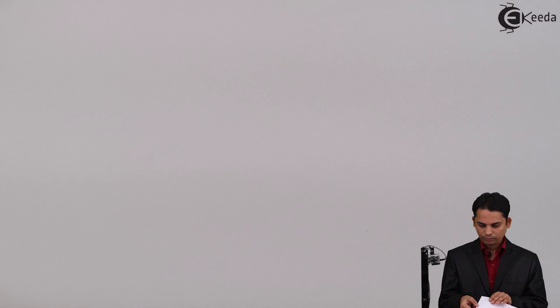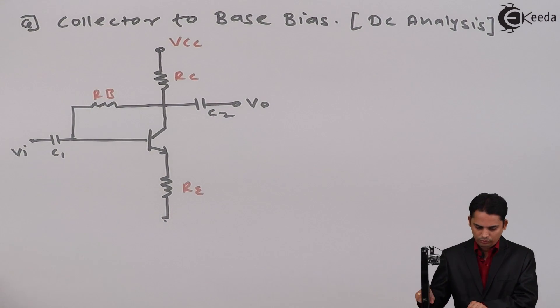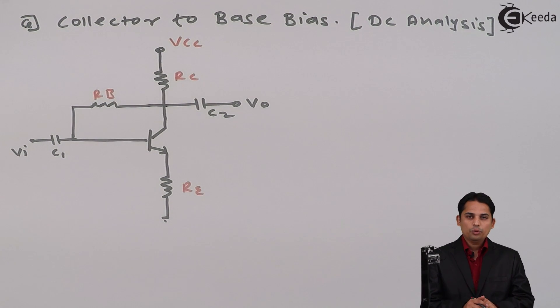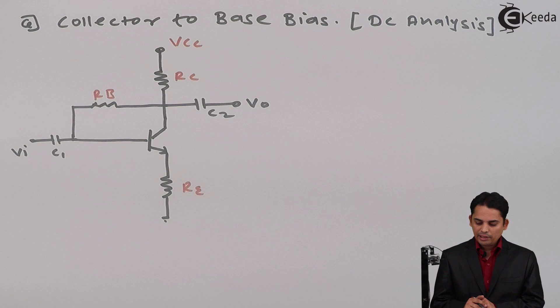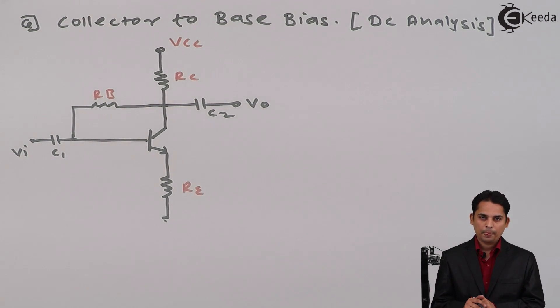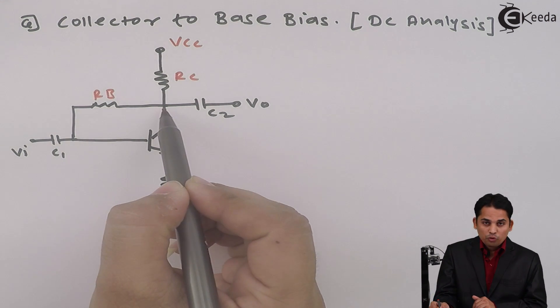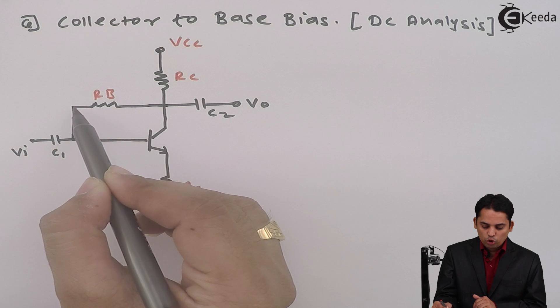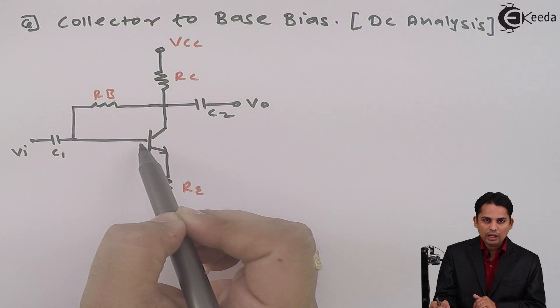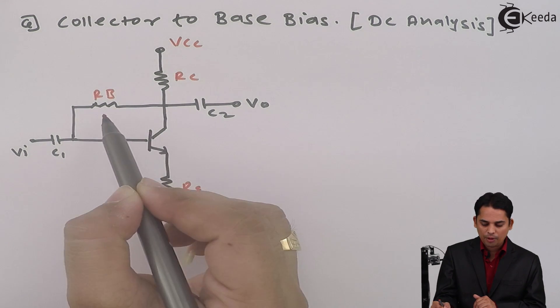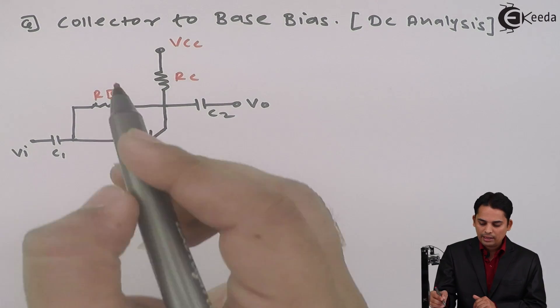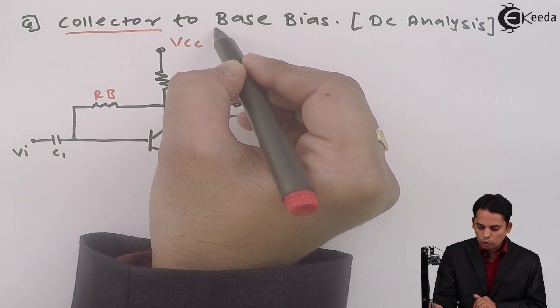Let's see the circuit diagram for collector to base bias. This is another type of circuit used in BJT. The key change in this circuit is that a loop from the collector is joined to the base with the help of base resistor RB, and hence it is called collector to base bias.